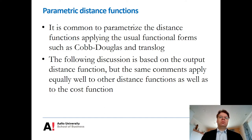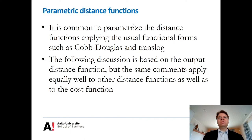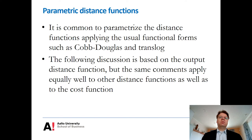According to duality theory, the properties of the technology carry over to the distance function. So if the true technology has a certain parametric form, then the distance function should have the same parametric form. In the following discussion I will mainly focus on the output distance function, but the same remarks apply equally well to other types such as the directional distance function and the cost function, which is also very commonly used for representing multiple outputs.